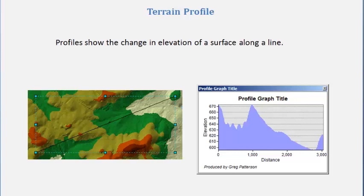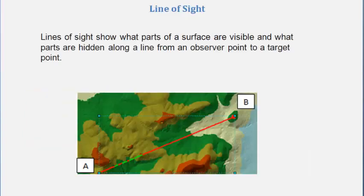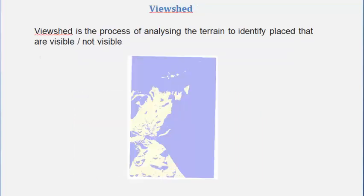The aspect data will show what's north, south, east, and west facing for the land. We'll also create a terrain profile of the land and look at line of sight to see what areas are visible when looking from one point to another — great for things like microwave towers.